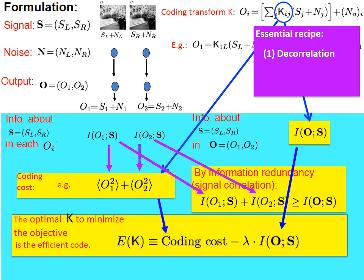For example, the cost may pay for two bytes of redundant information, but the actual non-redundant information extracted may be less. To increase efficiency, we decorrelate between O1 and O2, so that the inequality is replaced by an equality. In this way, when the cost pays for two bytes of information, we get the benefit of two bytes of information, with no redundant information wasting the cost.